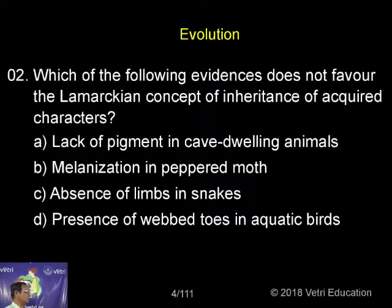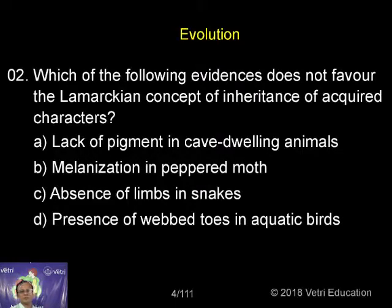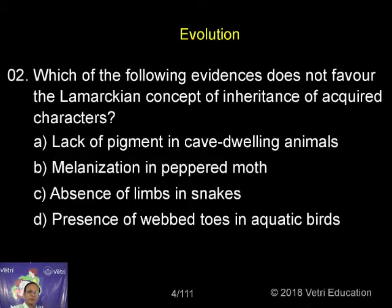When an organ is used continuously, its efficiency, its size, and its perfectness increases. If an organ is not in use for a long time, its efficiency decreases, its perfectness decreases, and also its size decreases. This is what is called the law of use and disuse.